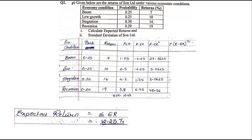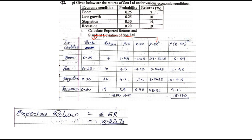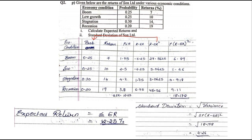Now we multiply each squared value by the probability: 27.5625×0.25, 5.0625×0.25, 3.0625×0.3, and 45.5625×0.2, giving us 6.89, 1.26, 0.918, and 9.11. The total comes to approximately 18.178, which is the variance. The standard deviation is the square root of the variance, which equals the square root of 18.178 ≈ 4.26. So our expected return is 12.25% and standard deviation is 4.26%.